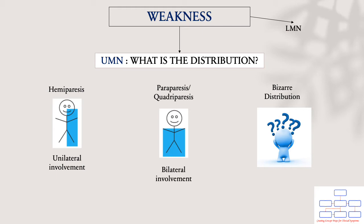Is it hemiparesis, which is a unilateral involvement of weakness? Is it paraparesis or quadriplegia, which is a bilateral involvement of weakness? Or is it a bizarre distribution that you cannot make out? We will look into each distribution separately in the next few slides.